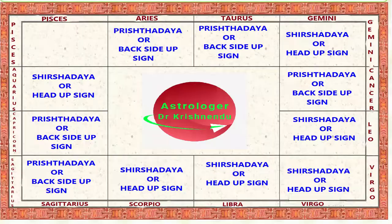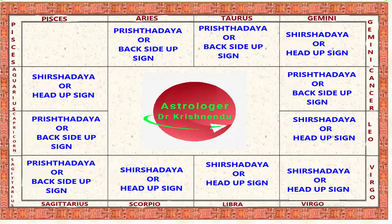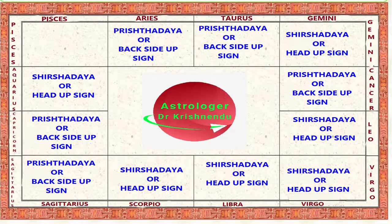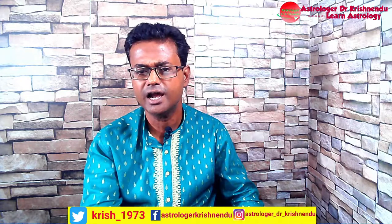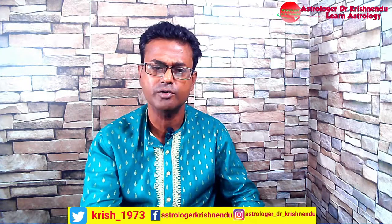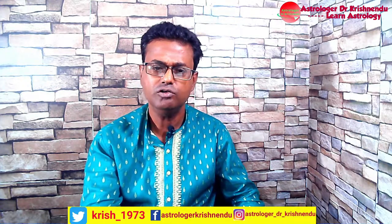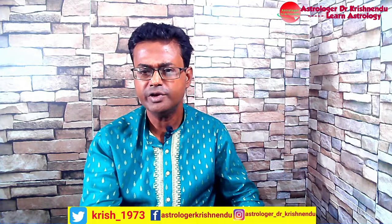Now about Sirsodoy or head-up signs and Prishtodoy or back-side-up signs. Sirsodoy signs are Gemini, Leo, Virgo, Libra, Scorpio, and Aquarius. Prishtodoy signs are Aries, Taurus, Cancer, Sagittarius, and Capricorn. These variations of zodiac signs are very necessary in the case of horoscope prediction, as outcomes vary between these types of signs.